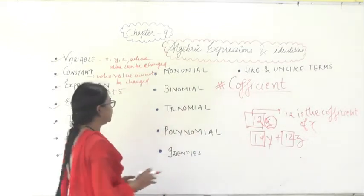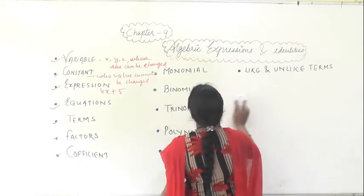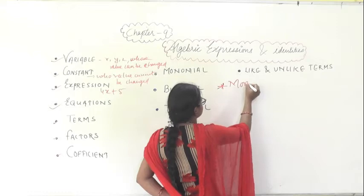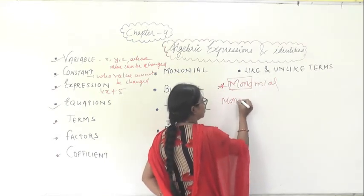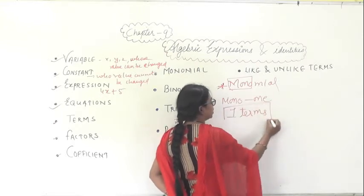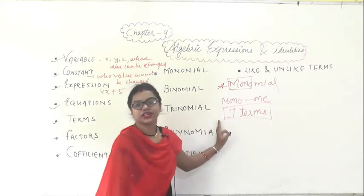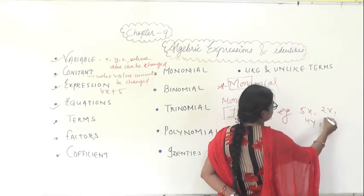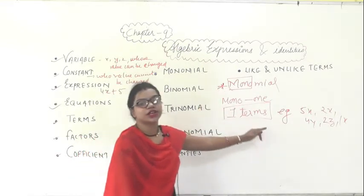We are going to study about monomial, binomial, and trinomial. What is a monomial? The term 'mono' means one. So a monomial will contain only one term. For example, 5x, 2x, 4y, 2z, 1x — these are monomials because each contains only one term. So these are known as monomials.